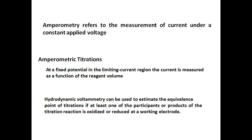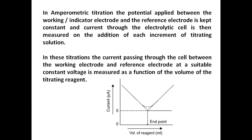A technique called hydrodynamic voltammetry is used to estimate the equivalence point — where the number of moles of one reagent is equivalent to the analyte. The condition is that any one of the participants in the titration — either the reagent, the analyte, or the product formed — must undergo an oxidation or reduction process at the working electrode. If none of them undergoes a redox process, it cannot be used for amperometric titration.